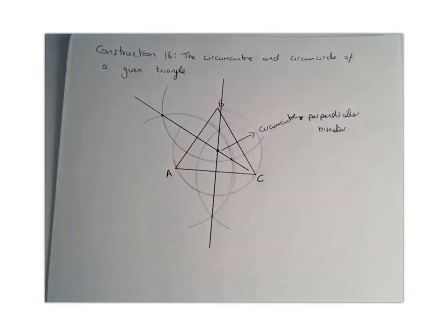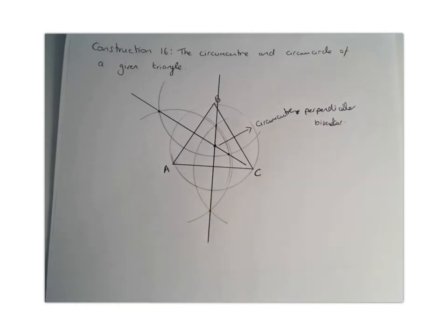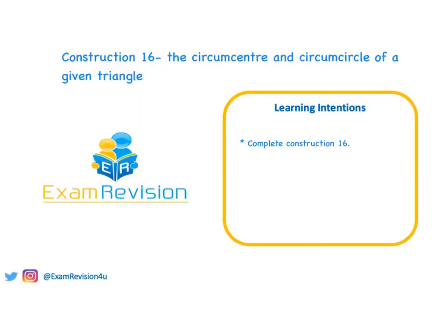There we have it—we have our circumcentre and we've just constructed our circumcircle, which hits the three vertices of our triangle. Thanks for watching today's video on Construction 16.